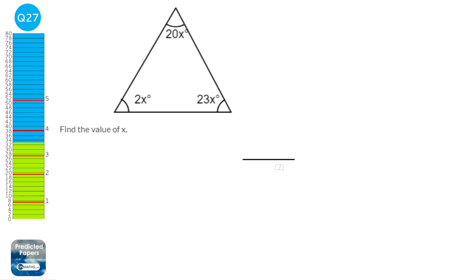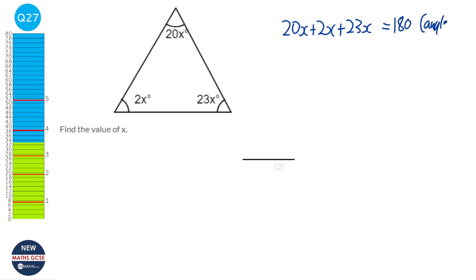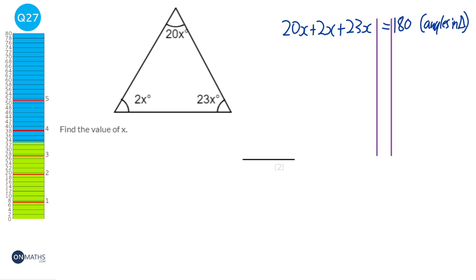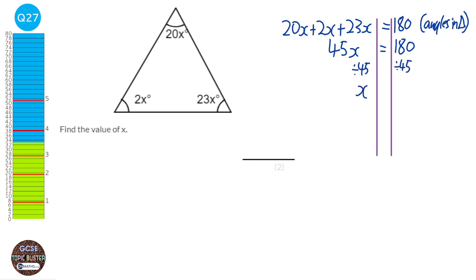We're given a triangle with angles in terms of x, and we know they add up to 180. So we do 20x plus 2x plus 23x, which equals 180 — because angles in a triangle add up to 180. On the left hand side, 2x plus 23x plus 20 gives 45x. Dividing both sides by 45, we end up with x equals 4.